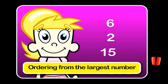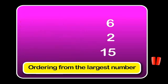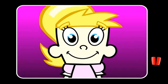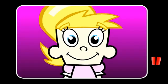If I was asked to order these numbers from the largest number, I would order them like this: 15, 6, 2. The largest number is first, then the next largest number, followed by the smallest number. Makes sense? That's how you order numbers.